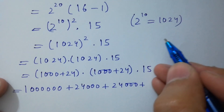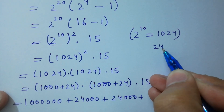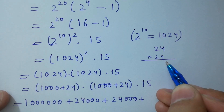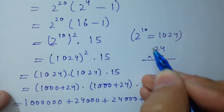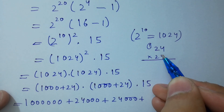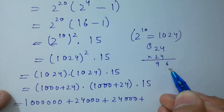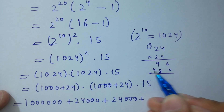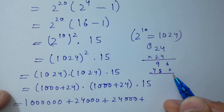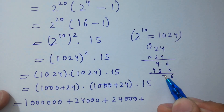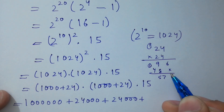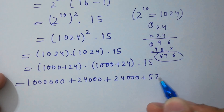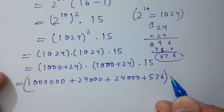Very simple to solve. Now 24 times 24: 4 times 4 is 16, carry 1; 4 times 2 is 8, plus 1 is 9; then 4 times 2 is 8, and 2 times 2 is 4. Adding gives us 576. So we have 576, and the expression is 576 times 15.